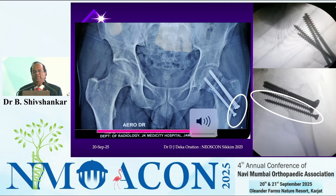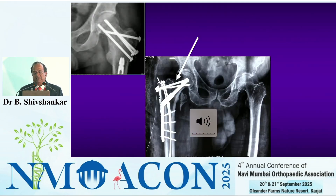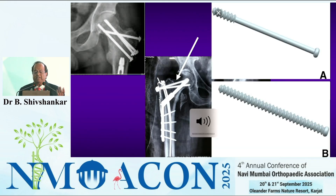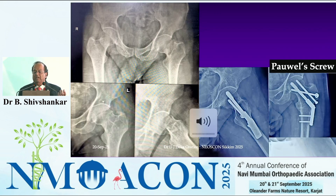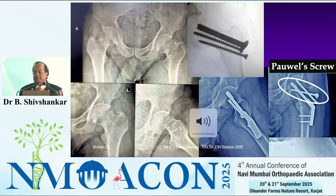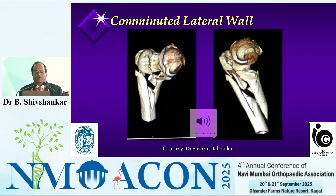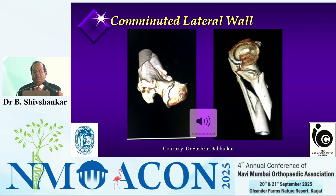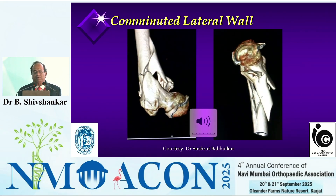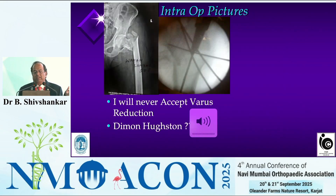Dr. Muki uses this technique — fully threaded screw prevents unwanted collapse at the fracture site; that's how these fractures heal. A power screw also prevents collapse at the fracture side. If you accept that in a transcervical fracture you require absolute stability with no collapse, why should you allow collapse to happen in an intertrochanteric fracture? You should fix the intertrochanteric fracture with full compression on the table and not allow any collapse to happen.